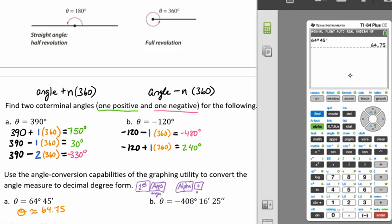So in order to convert negative 408 degrees, 16 minutes, and 25 seconds into decimal degree form, we'll go negative 408. We'll go to second, apps, to get our degree symbol. 16. And then for minutes, we'll go to second, apps, again, to get our minute symbol. And then 25. And we'll go to alpha plus sign for our seconds. We'll hit enter. And that will give us negative 408.2736111 as our angle.